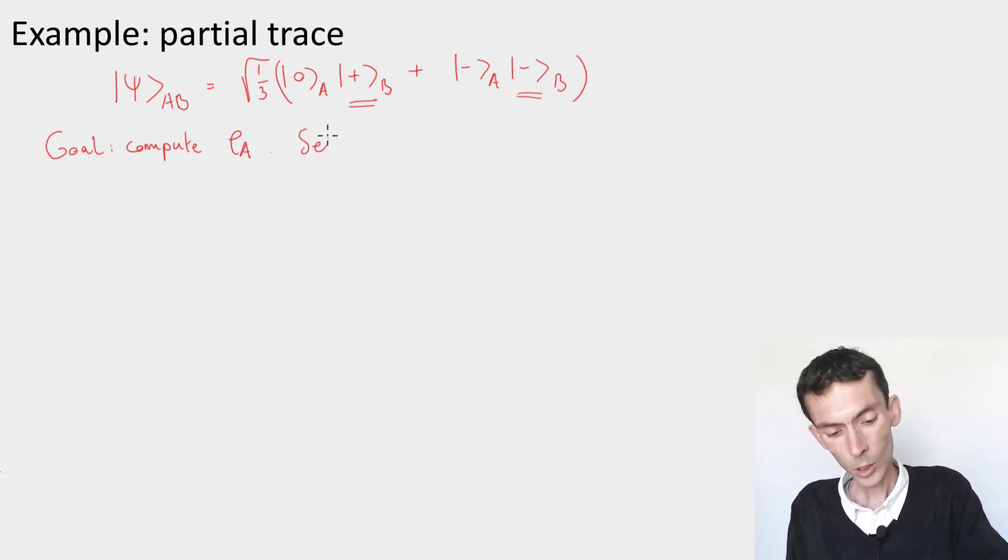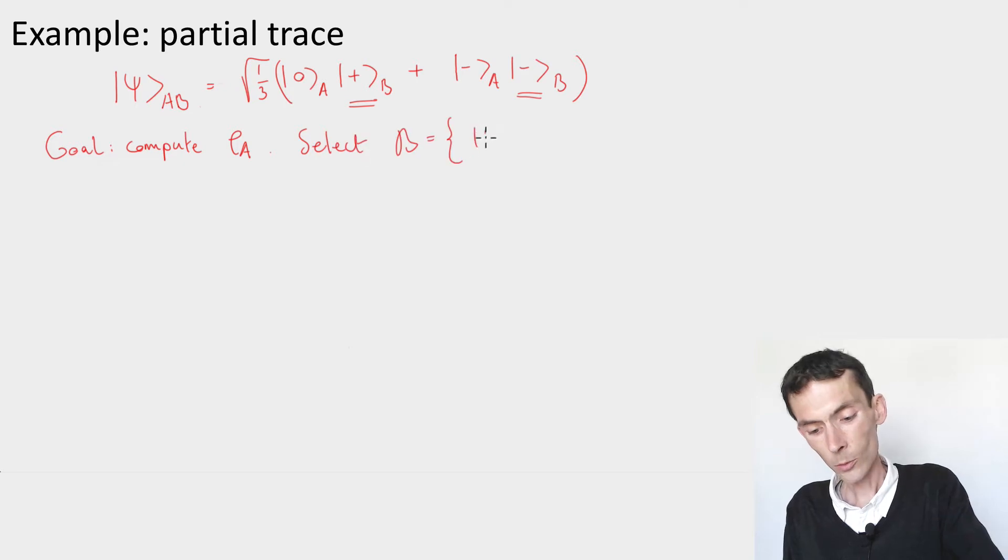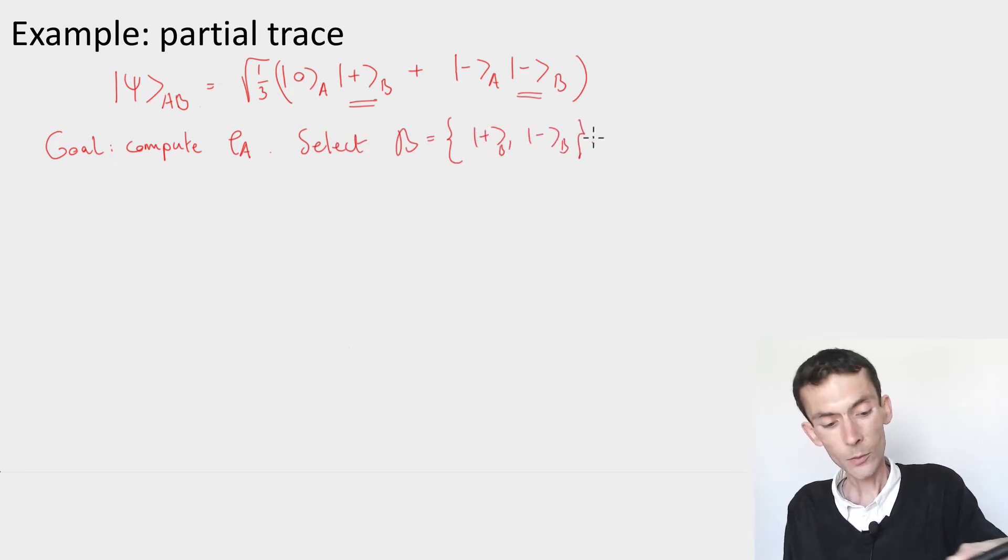So let's choose our basis B to be the Hadamard basis, plus and minus on B. And let's measure B using the associated POVM elements. So we can choose two POVM elements,